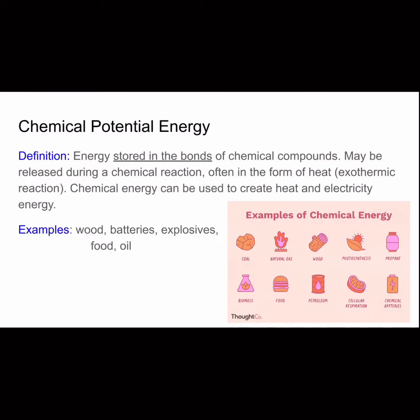Chemical potential energy is the energy stored in the bonds of chemical compounds. It can be released during a chemical reaction when those bonds are broken, and it's usually released in the form of heat — so in an exothermic reaction it releases heat. Chemical energy can be used to create heat and electricity. Examples include wood, batteries, explosives, food, oil, and many other things shown in the picture.